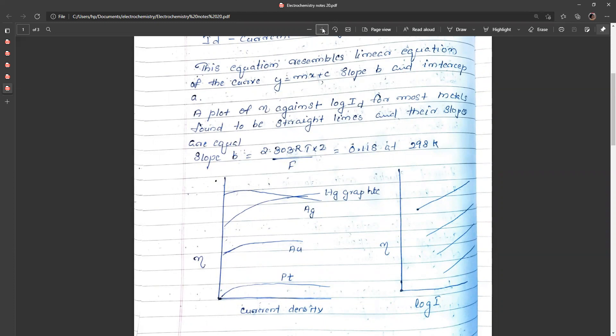A plot of eta against current density is found to be straight lines. Straight lines and their slopes are equal. In all metals, the slopes are equal and they are parallel lines. Straight lines slope of b equals 2.303 RT times 2 by F, 0.118 at 298 Kelvin. This is the proof for Tafel theory.